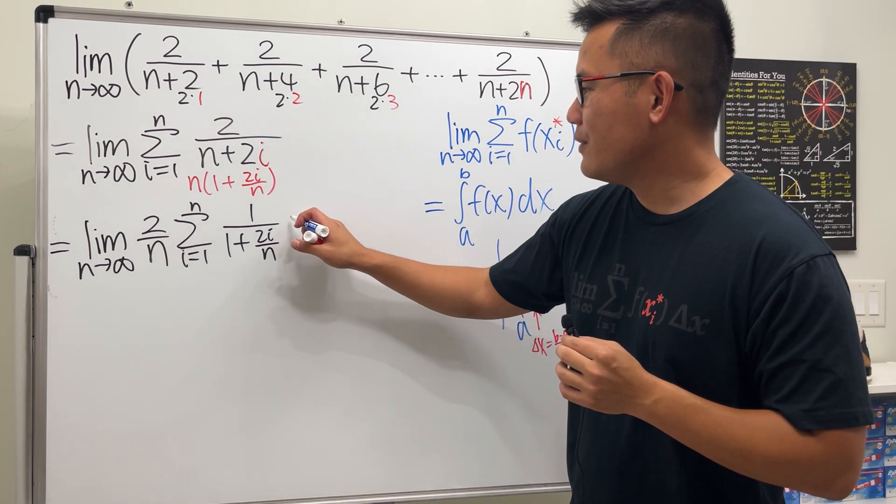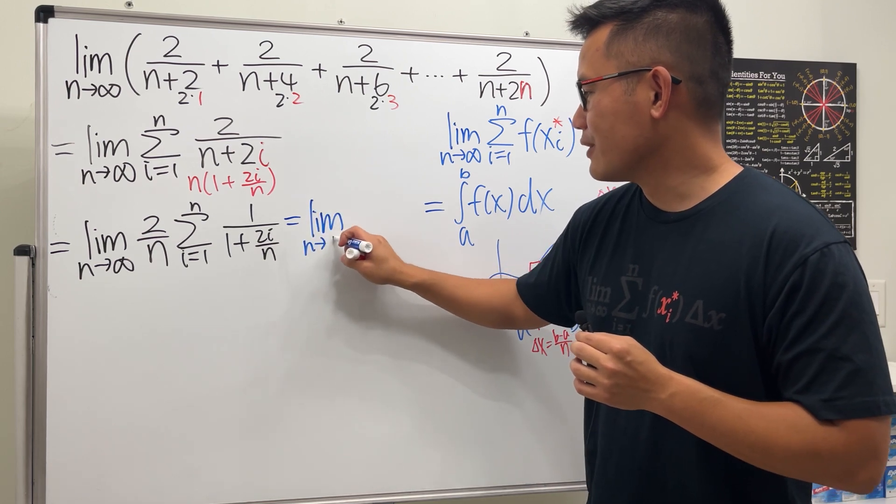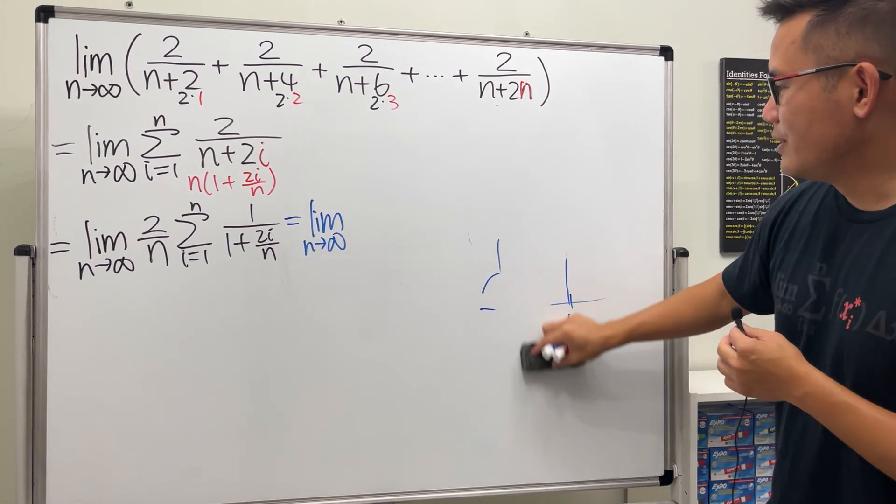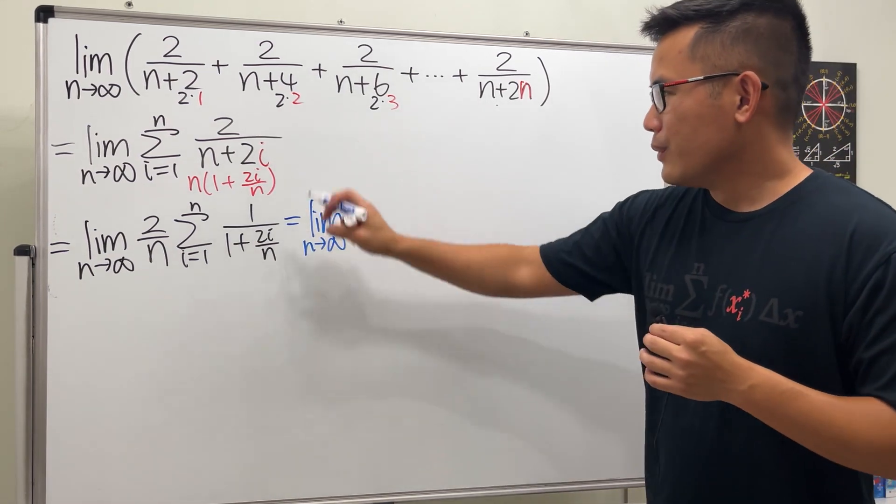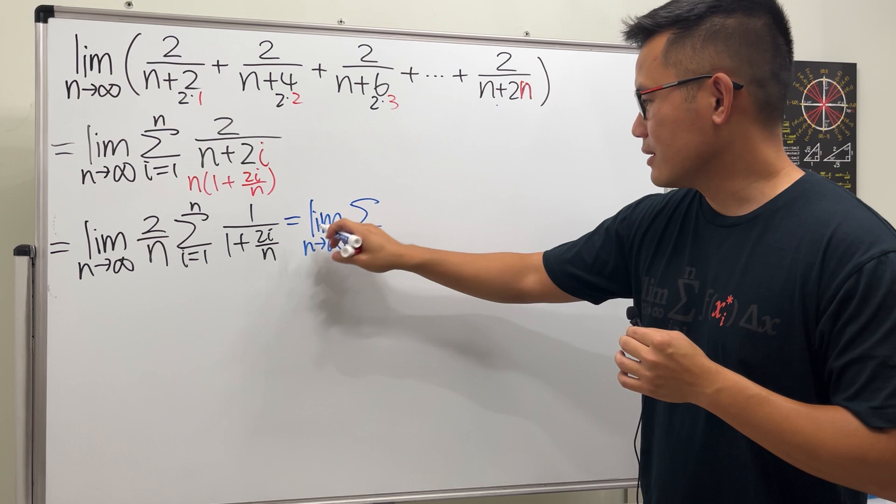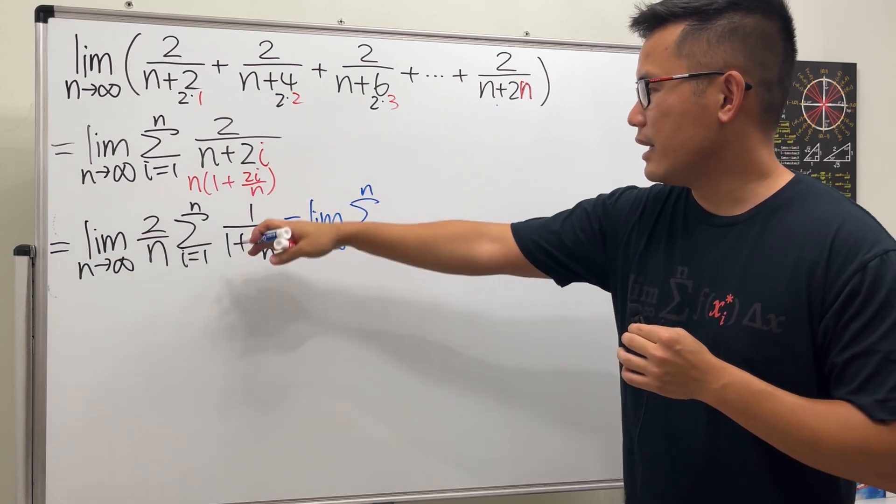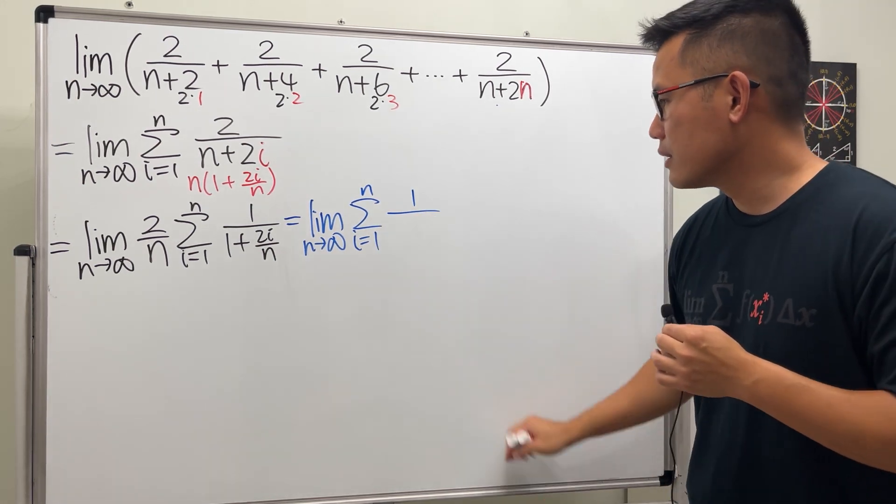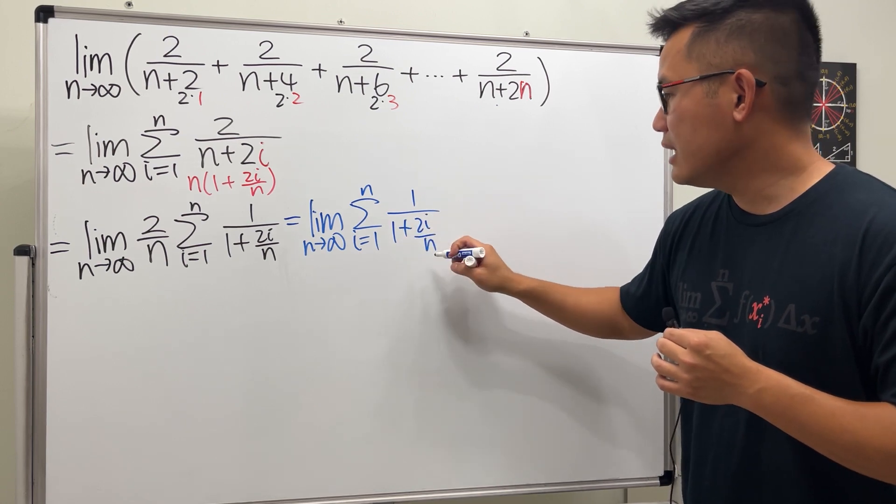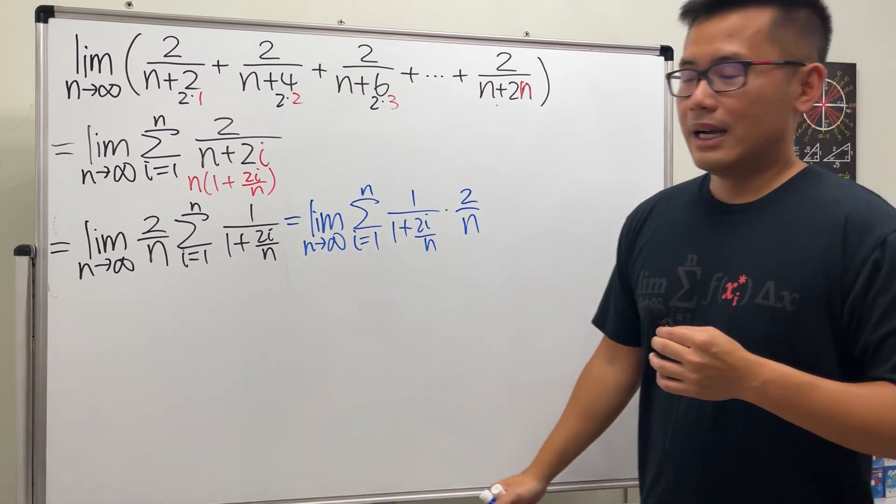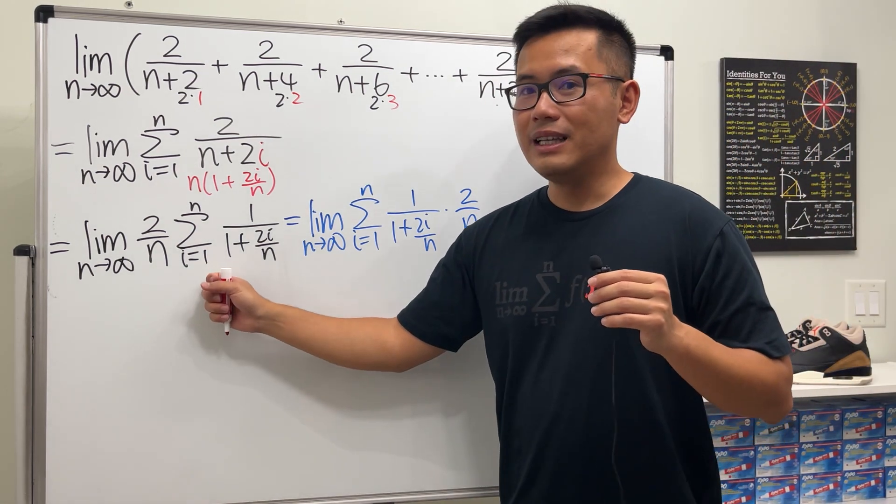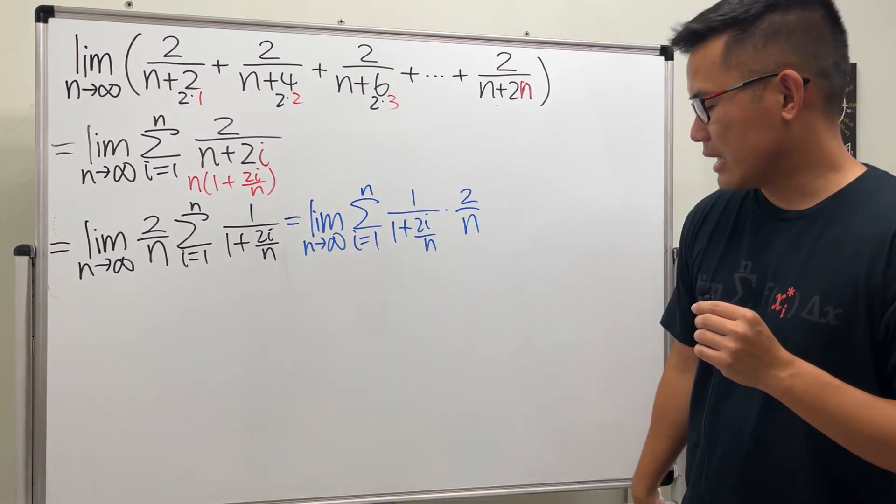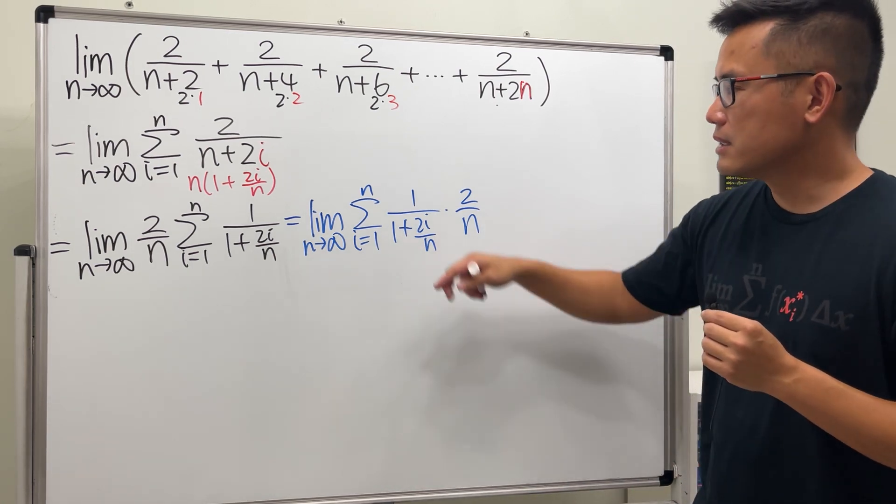But it's definitely okay if you want to say this as the limit as n goes to infinity, i goes from 1 to n, and then just put 1 over 1 plus 2i over n, and then times the 2 over n at the end. Trust me. Most of the time, if the question is given to you in sigma notation form, then you are going to expect to see this kind of expression written in that.